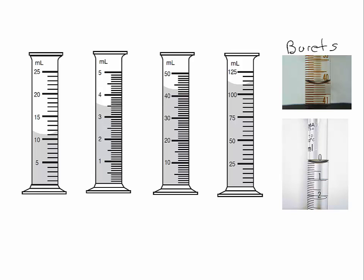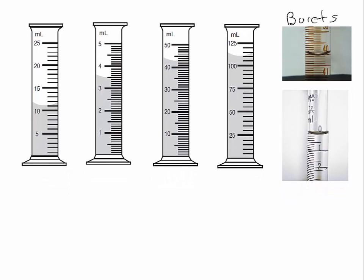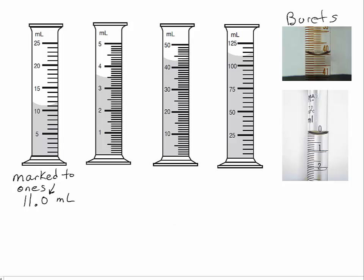Let's take a look at these devices with liquids in them. Go ahead and pause the video as you determine what the volume reading would be on each of these devices. The graduated cylinder on the left has nice big markings for 5, 10, 15, 20, 25, and smaller markings every one milliliter. So it's marked to the ones, which means we can estimate to the tenths. We should say 11.0 milliliters for the volume, precise to the tenths.